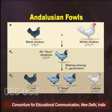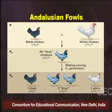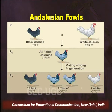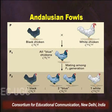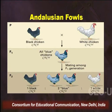A similar type of incomplete dominance is demonstrated by Andalusian fowls. Mating between a black and a white fowl produces progeny that are all blue — a new third phenotype. Mating between two blue individuals, indicated by C superscript W and C superscript R, again gives a ratio of 1:2:1 — one quarter black, one half blue, and one quarter white.